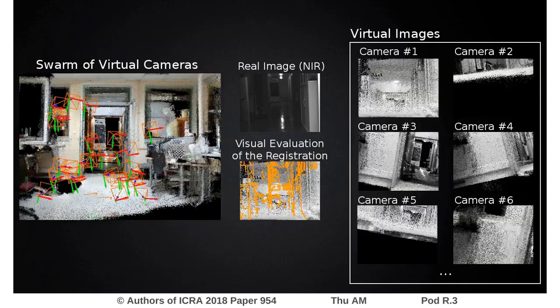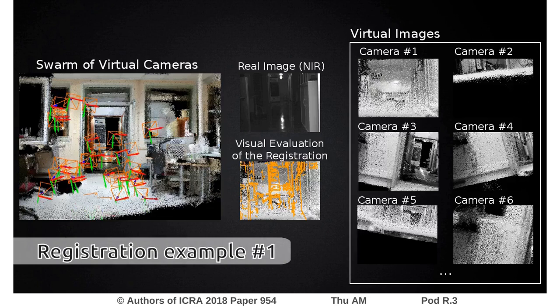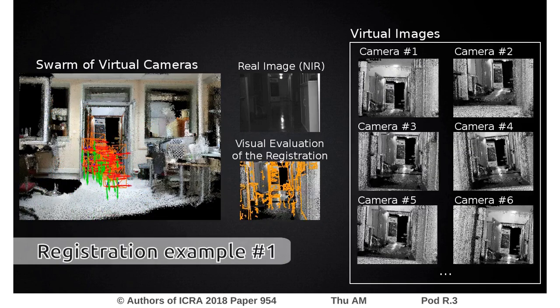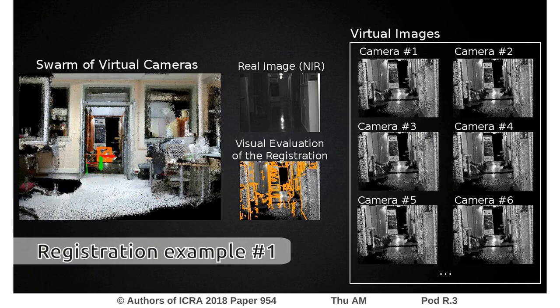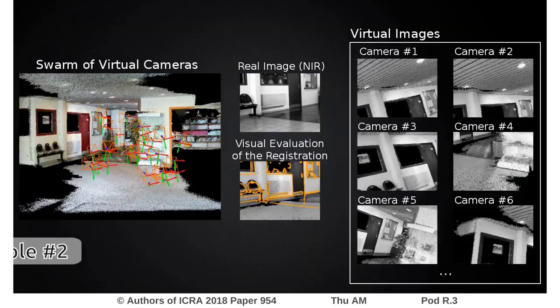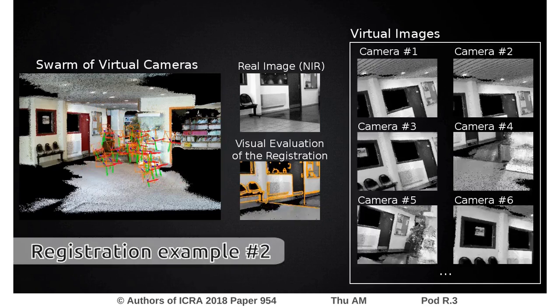Here are some examples of the registration of near-infrared images over the 3D model. 30 virtual cameras are randomly initialized in the search space of the swarm, and the number of virtual cameras created during the creation stage is limited to 20. For ease of visualization, the images of only 6 virtual cameras are displayed here.